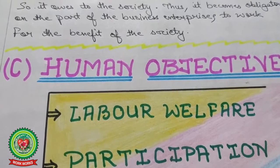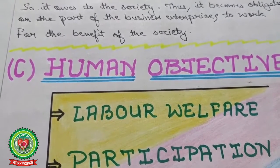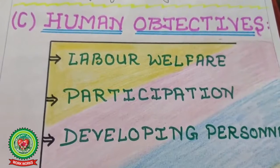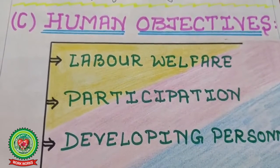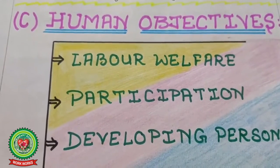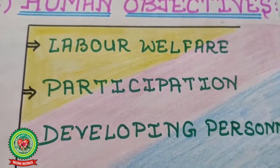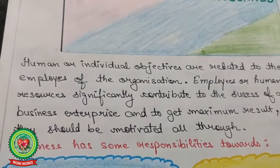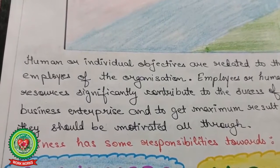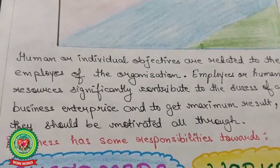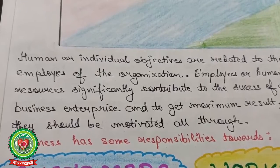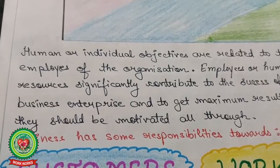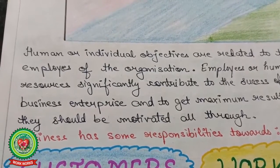The third objective is the human objective. From its name it is clear — human means dealing with human beings, meaning employees and laborers. Points covered under this objective include labor welfare, participation, and developing the personal. Human or individual objectives are related to the employees of the organization. Employees or human resources significantly contribute to the success of a business enterprise, and to get maximum results, they should be motivated throughout.